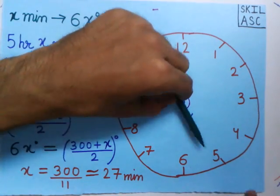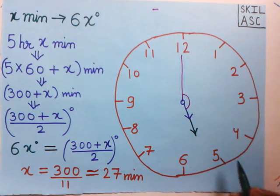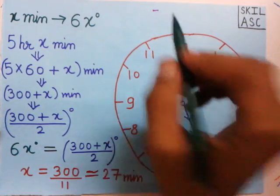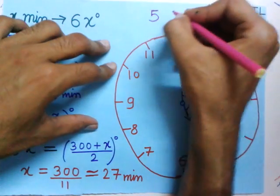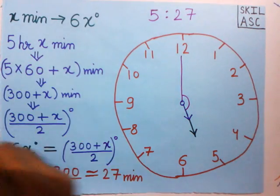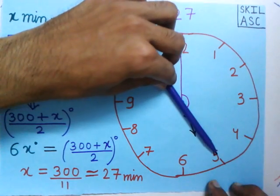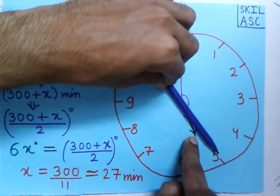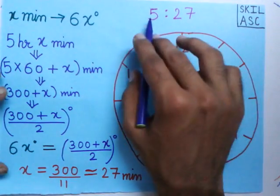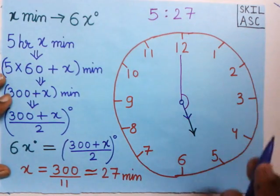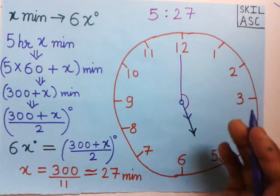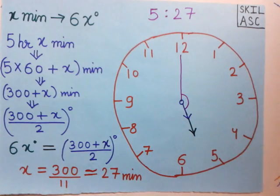The minute hand takes 27 minutes to go from the reference position to the required position. Since the time is between 5 and 6, and the hour hand has already covered 5 hours, the exact time is 5 hours 27 minutes — that is, 5:27, or 27 past 5. That's how we find the time. I hope you have understood. Thanks for watching.